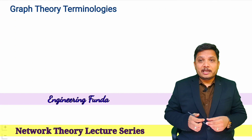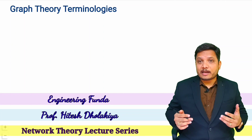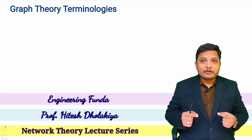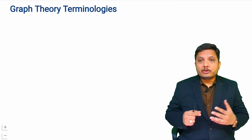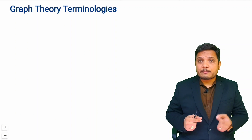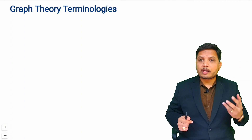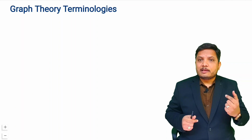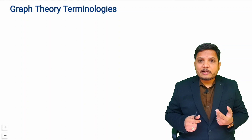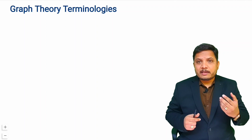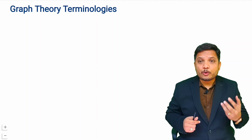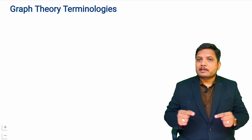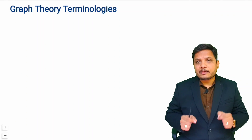Welcome to Engineering Funda family. This video is part of the Network Theory lecture series and in this video I will explain graph theory terminologies. Topics covered include: what is a branch, what is a node, what is degree of node, different types of nodes like terminal node and isolated node, and graph elements like tree, cotree, twig, and links.